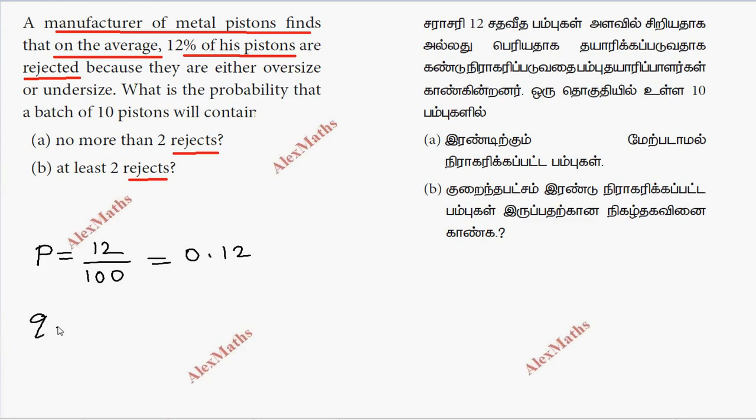Q is 1 minus P. So 1 minus 0.12 is 0.88.